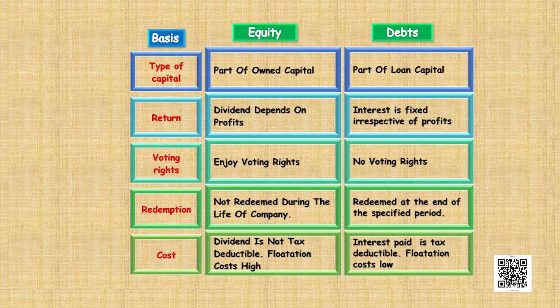On the basis of voting rights, equity shareholders have voting rights but debt holders have no voting rights. On the basis of redemption, equity shareholders are not redeemed during the lifetime of the company — they are redeemed only when the company is wound up. The redemption of debt holders takes place at a fixed point of time, on the date promised or before that.